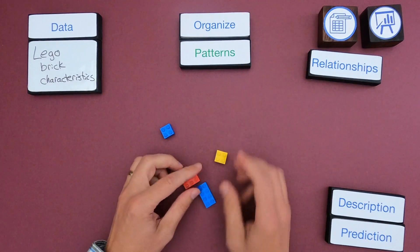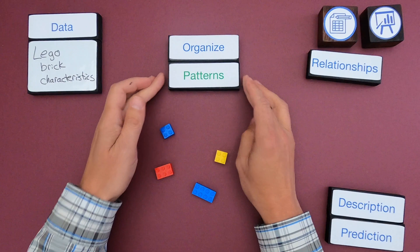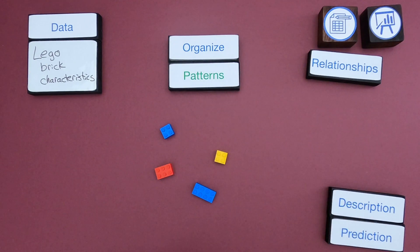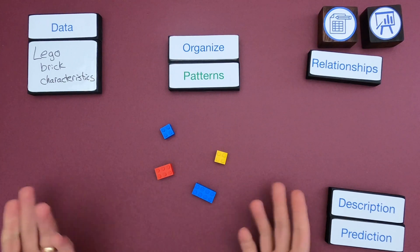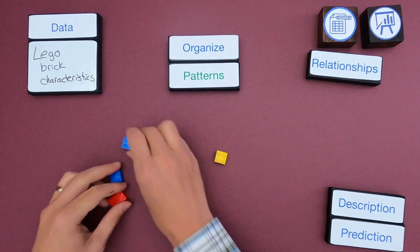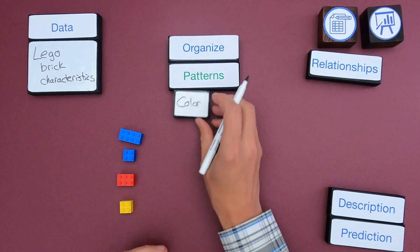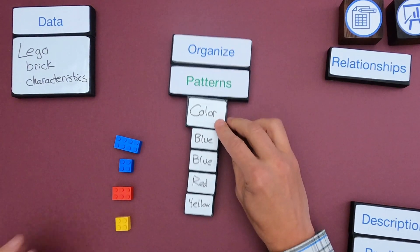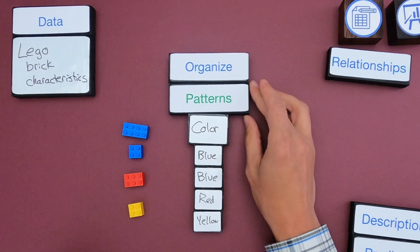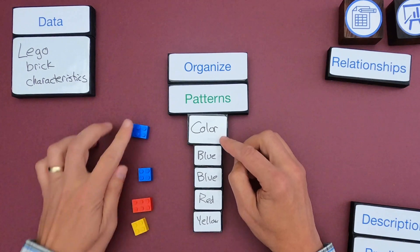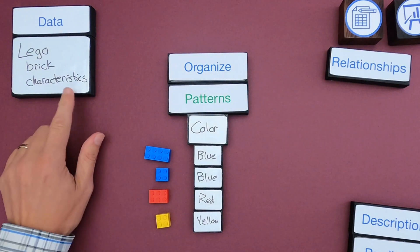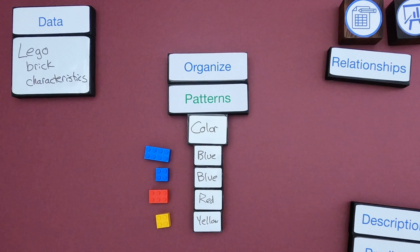Once I've observed them, all I'm trying to look for as I organize data in a data table are what are some patterns that I notice. A lot of people have a limited view of a pattern as something that has to repeat itself, but all a pattern is in science is just what regularity do you notice. The first thing I notice is that they have different colors, so let me organize them according to color. I notice there's color: the first brick is blue, the next is blue, the next one is red, and the next one is yellow. So what's another characteristic?